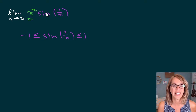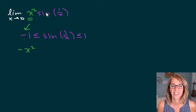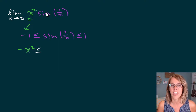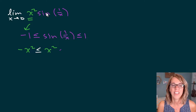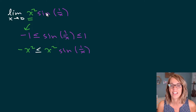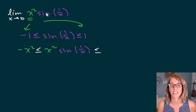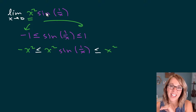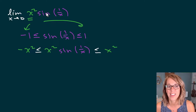As I multiply through, I get x squared times negative one, which is negative x squared, and then less than or equal to x squared times sine of one over x, and then less than or equal to one times x squared, which is x squared.